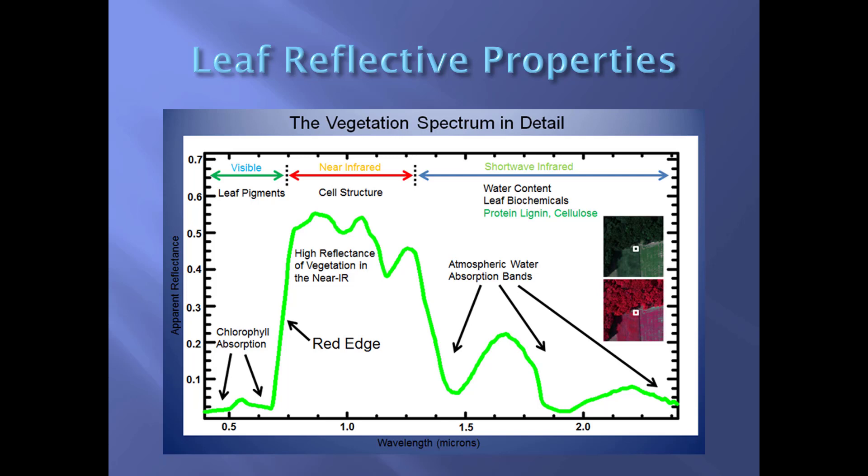Here is a diagram showing leaf reflective properties that scientists use to calculate or estimate NDVI. Wavelength is on the x-axis and apparent reflectance is on the y-axis, showing portions of the visible, near infrared, and shortwave infrared. The visible portions act on leaf pigments, the near infrared acts on cell structure, and shortwave infrared acts on water content and leaf biochemicals.